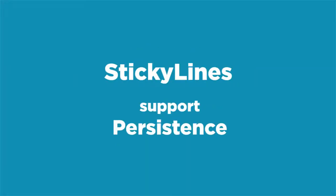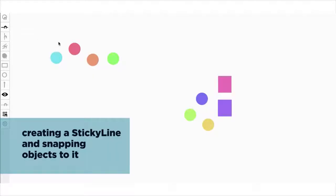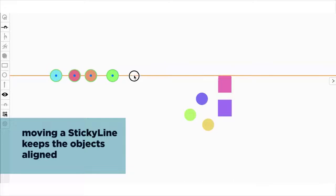We introduced sticky lines. Sticky lines support persistence. Users can create a sticky line and snap objects to it. Moving the sticky line keeps the objects aligned.